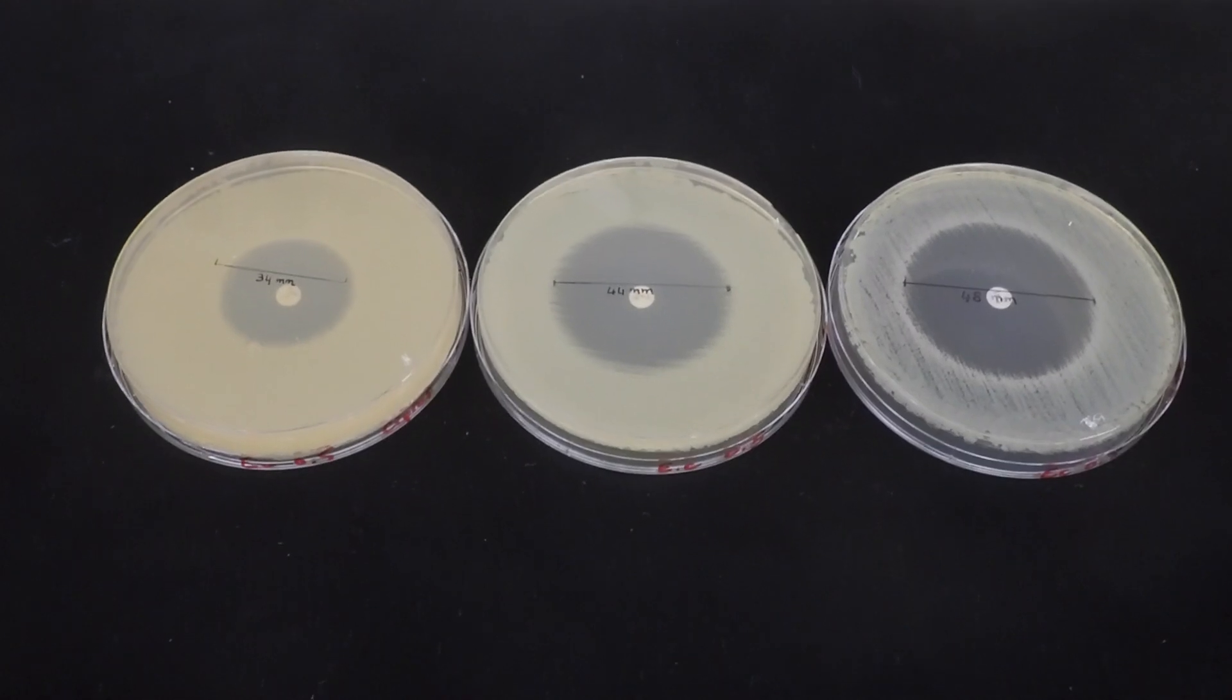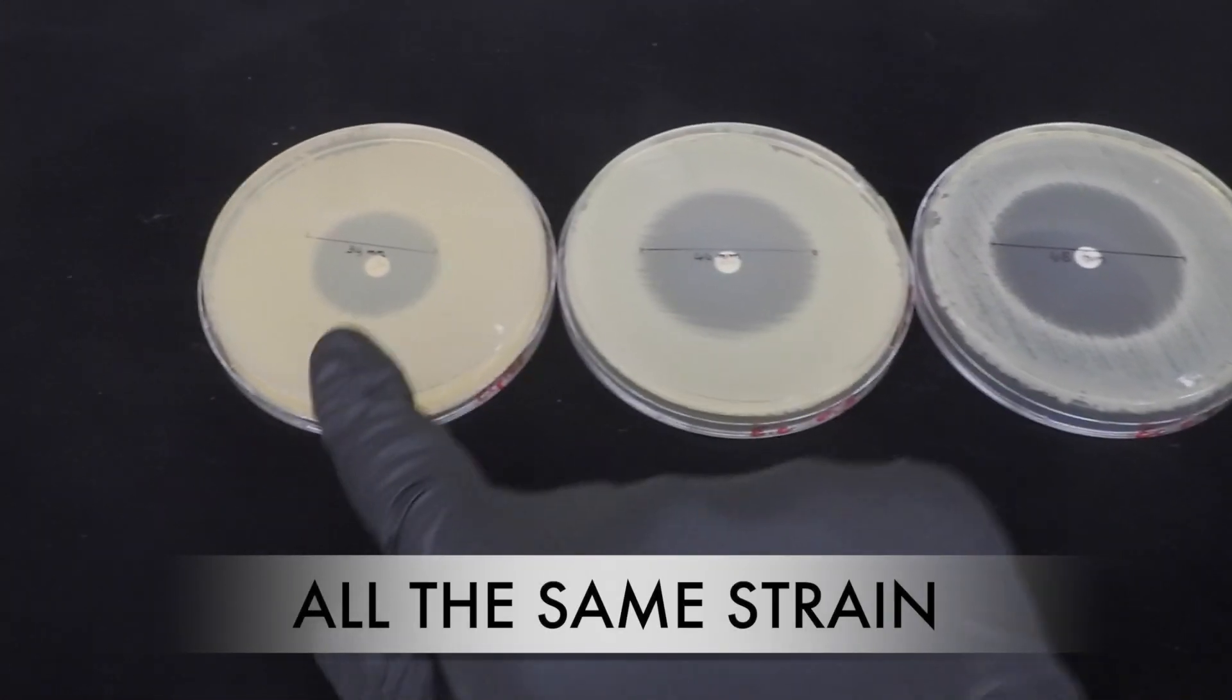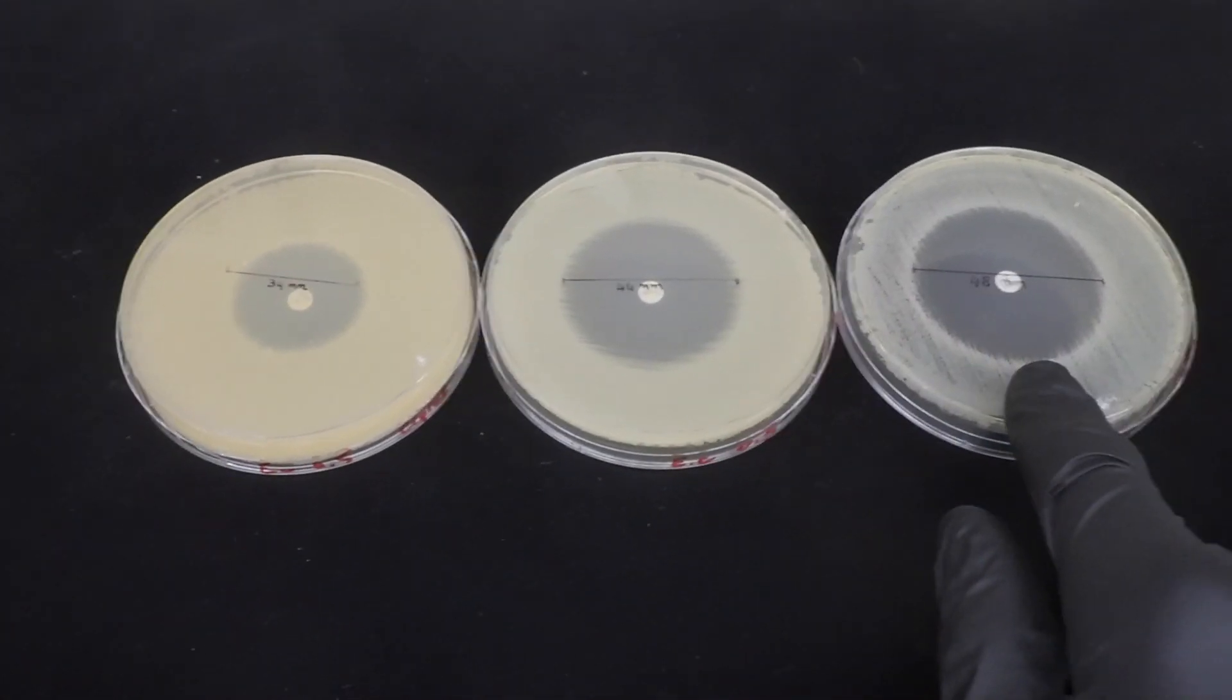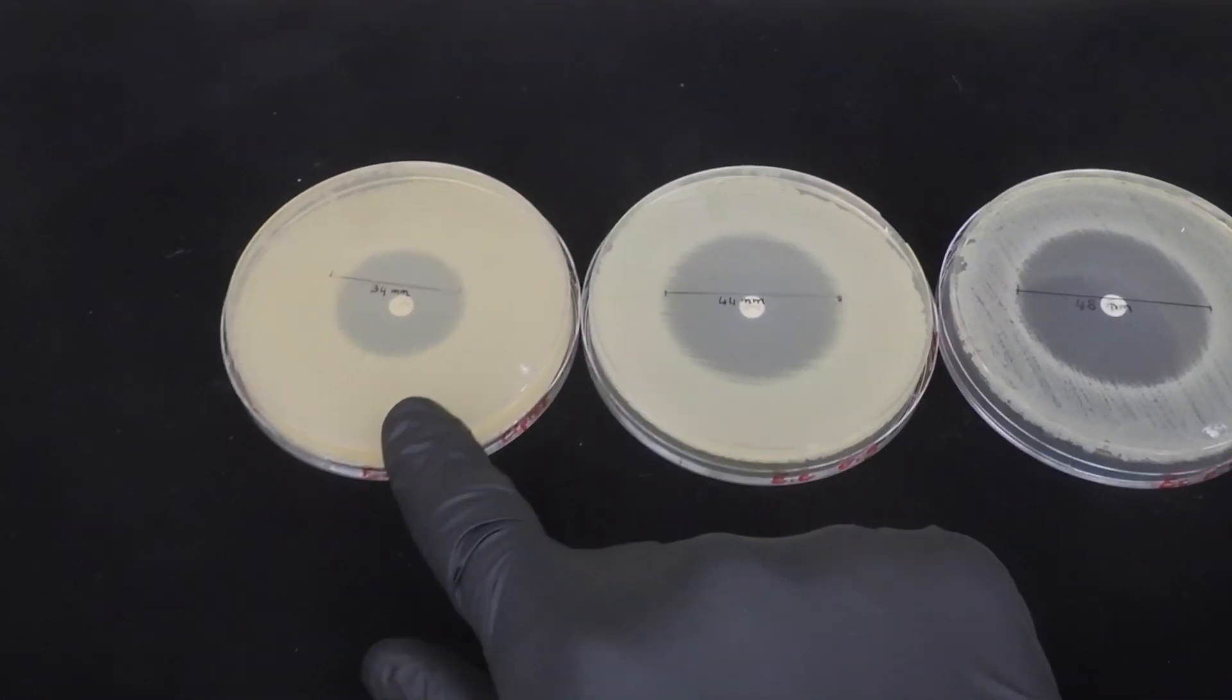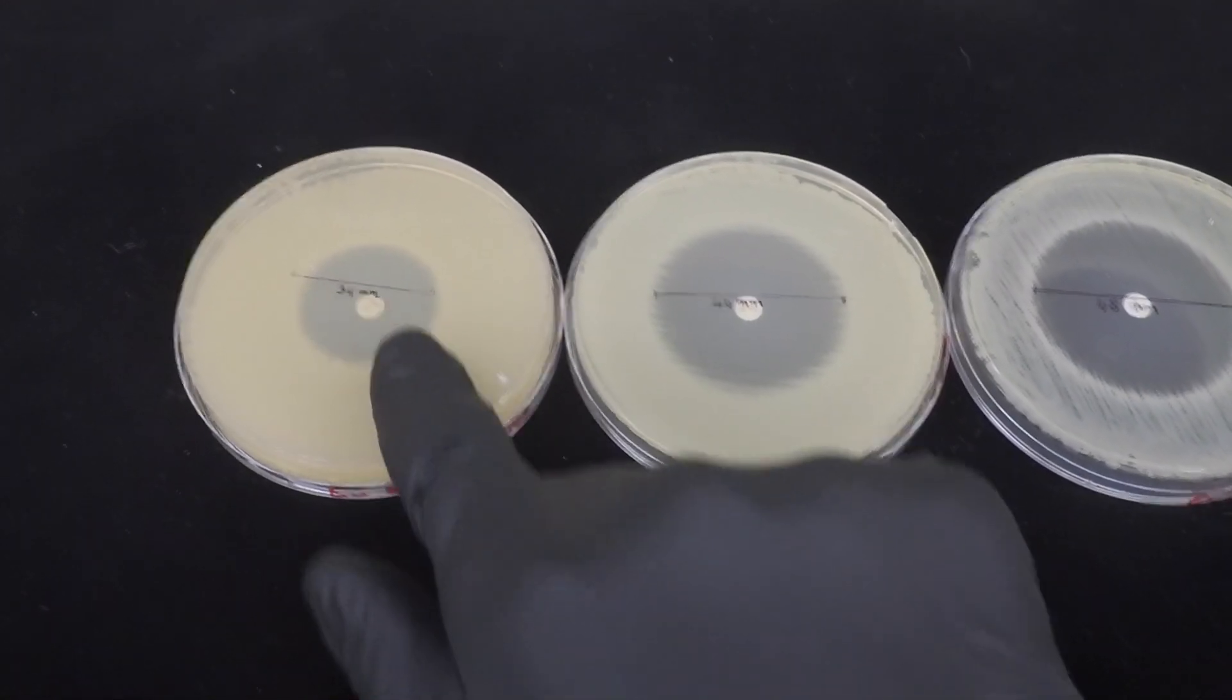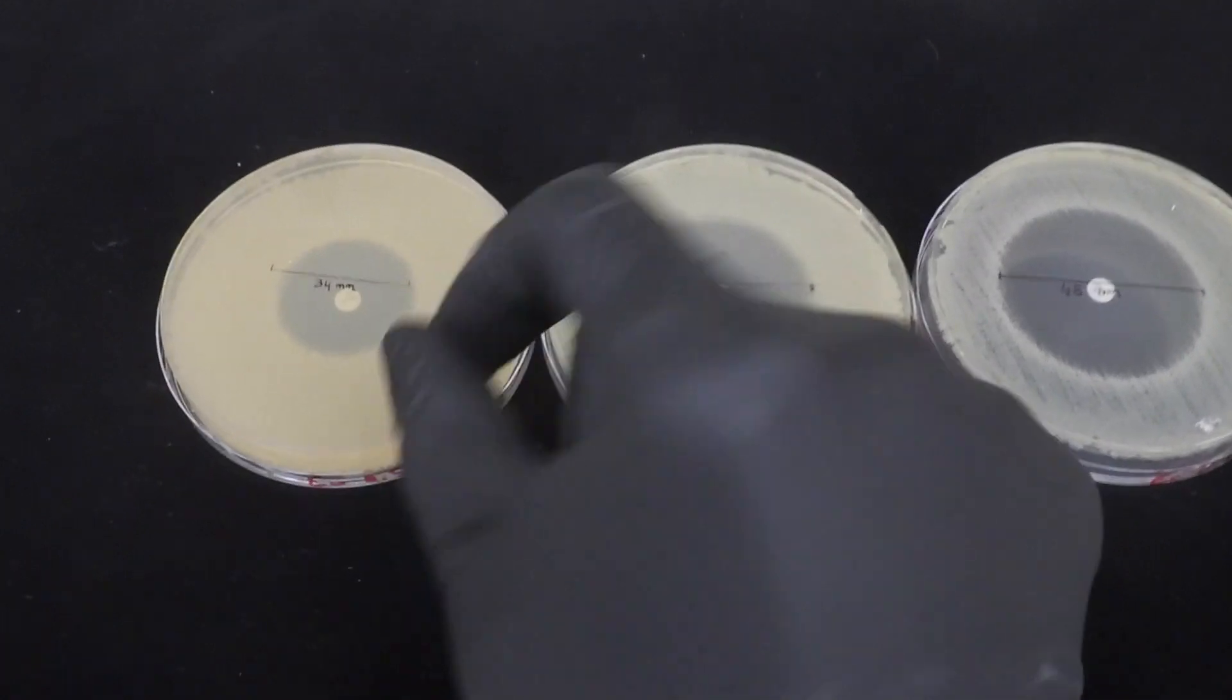In these three plates what you can see is a ciprofloxacin disc test done on E. coli. On the left, center, and right we have agar with different depths. On the far left we have our thickest media with our narrowest inhibitory zone indicating that the drug is diffusing more down than out.